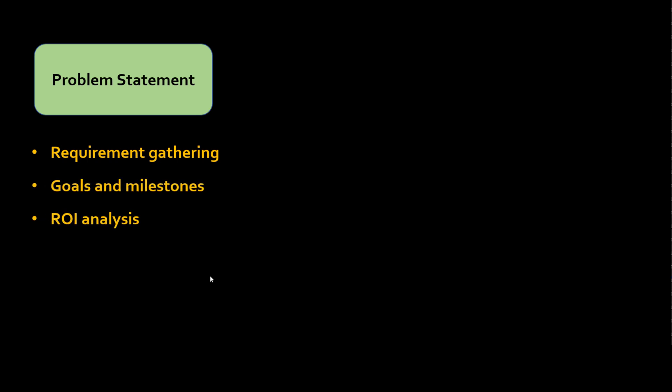Any machine learning project starts with a problem statement, where you figure out what problem you want to solve using machine learning. This covers requirement gathering, goals, milestones, and ROI analysis. The business manager meets with stakeholders to figure out, for example, how a recommendation engine for an e-commerce website will work and how it can help the company bring more customers or revenue.